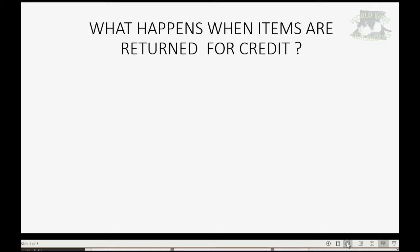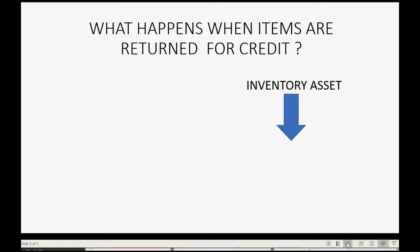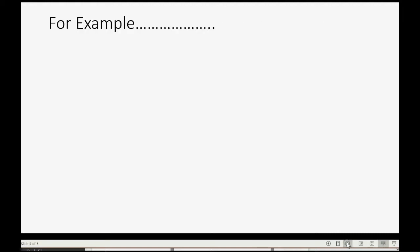What happens in the accounts when we return items that we purchased on credit? Obviously, inventory asset goes down for the amount we paid for the items, because if we're physically giving back items to the vendor we have less inventory. And because the vendor's balance is reflected in accounts payable, we owe the vendor less money, so both inventory asset and accounts payable will decrease for the purchase cost of the items returned.